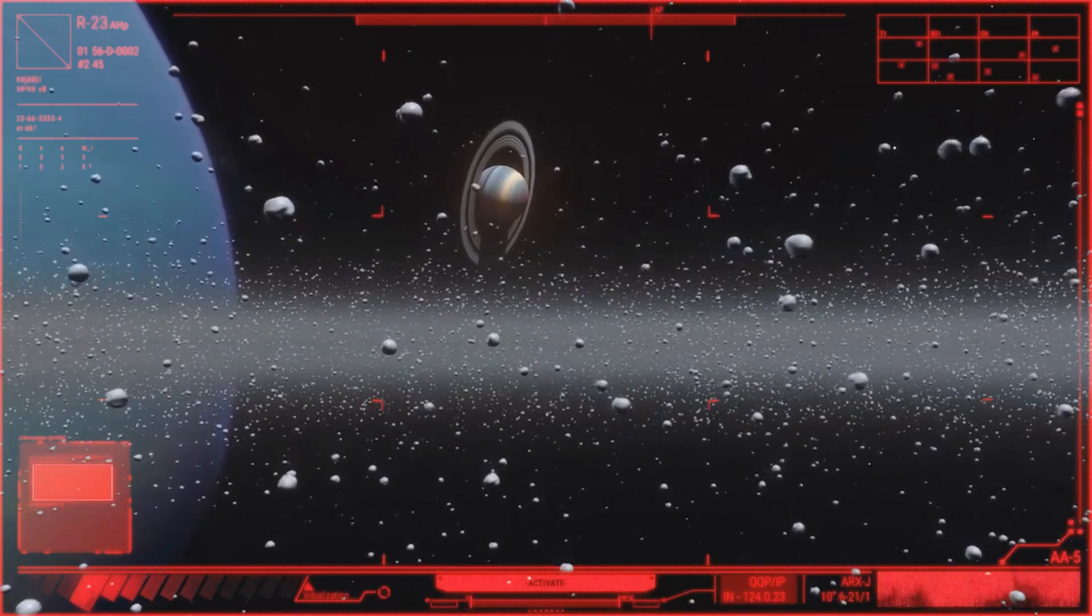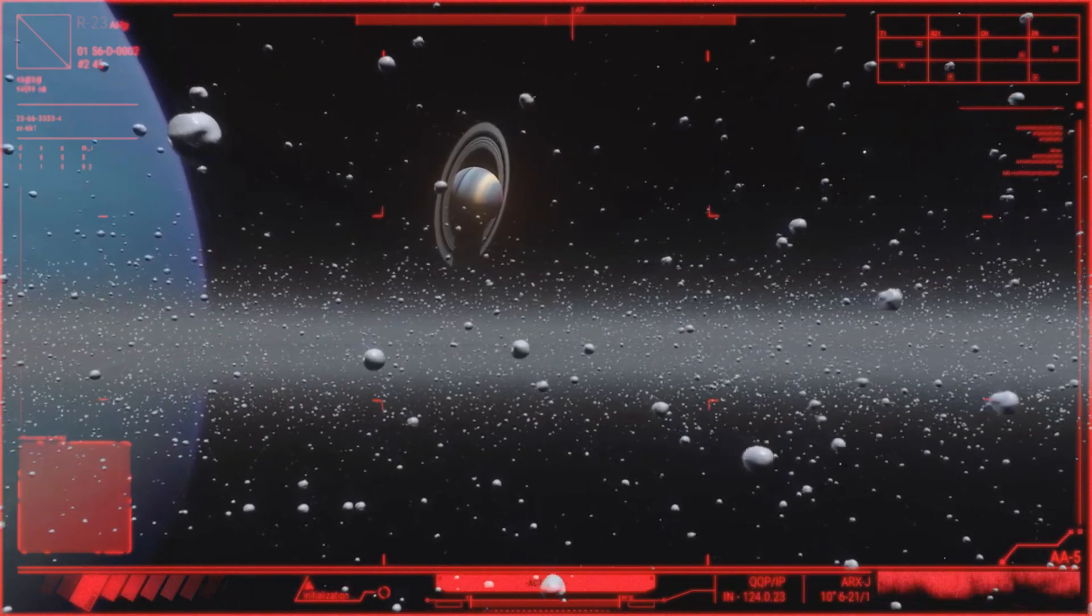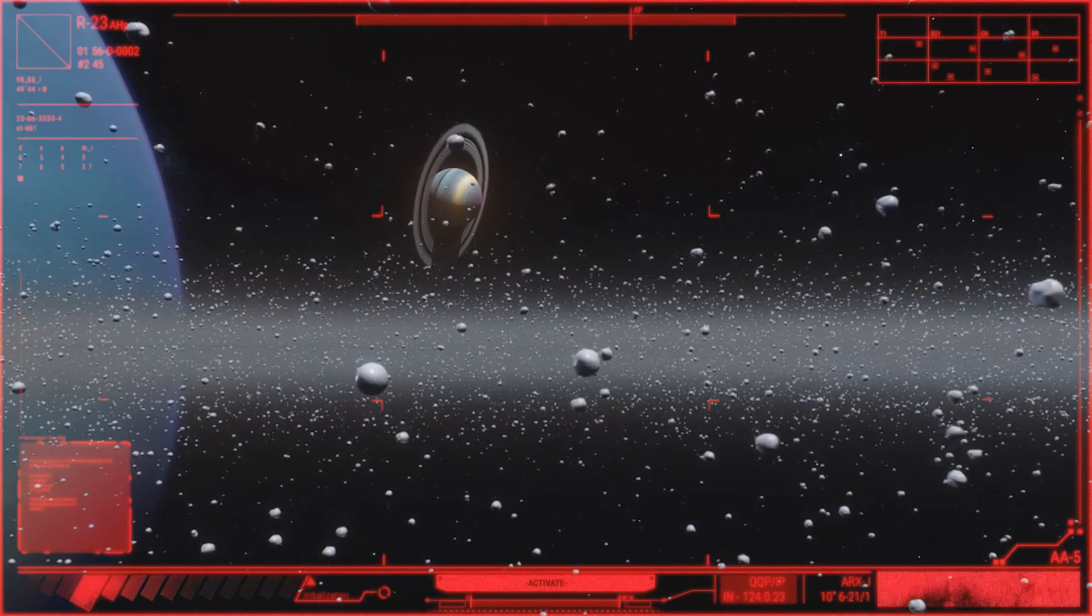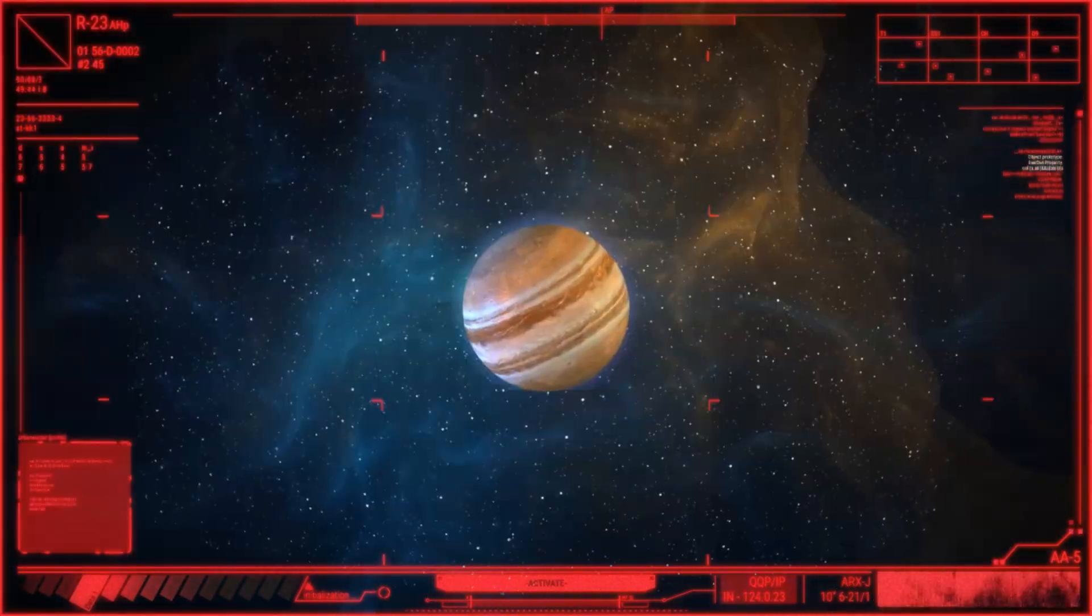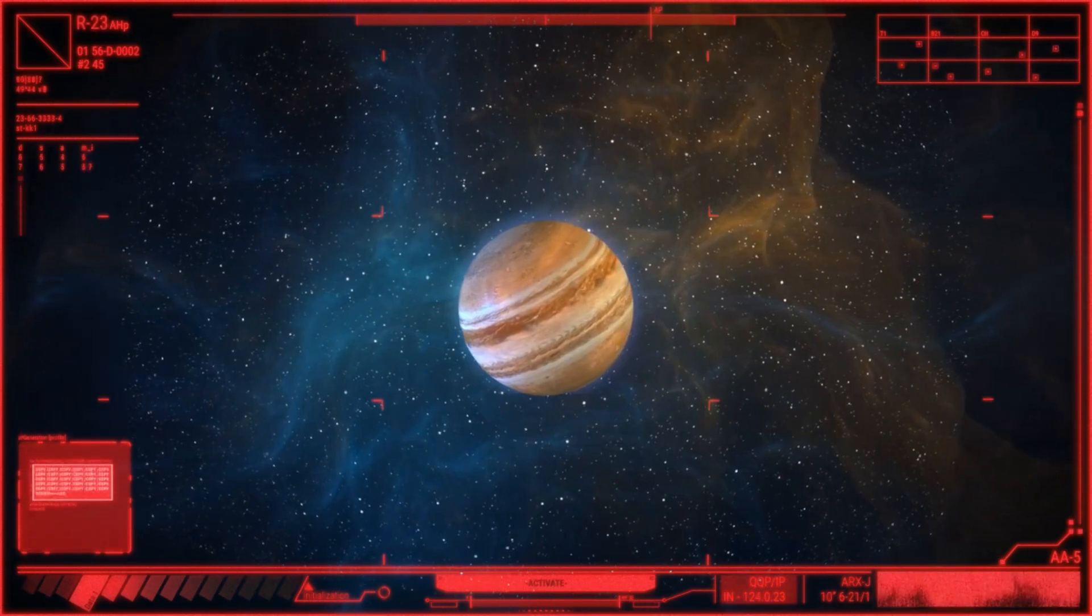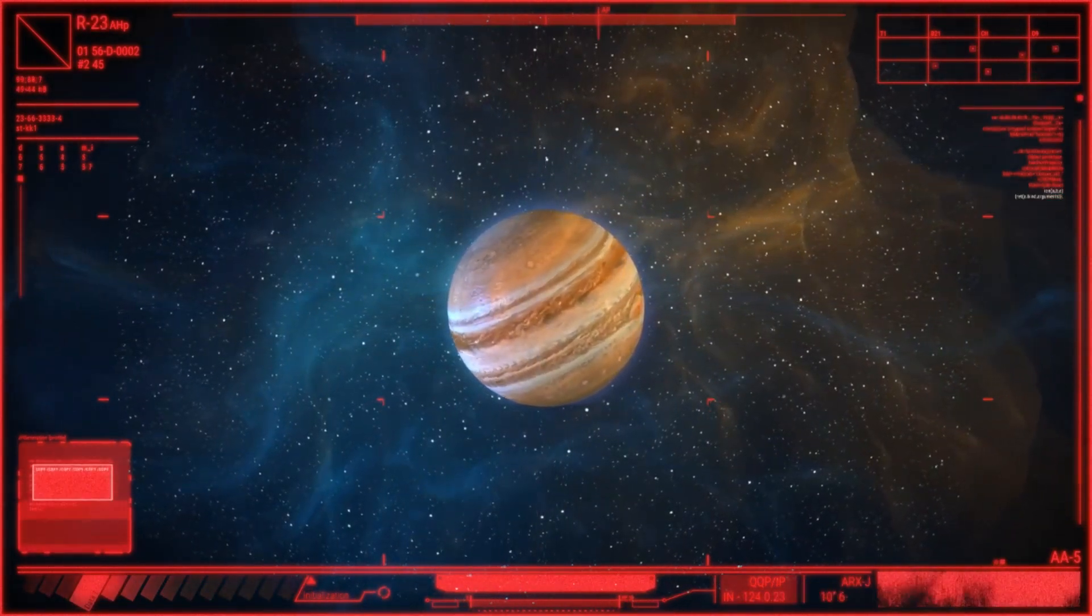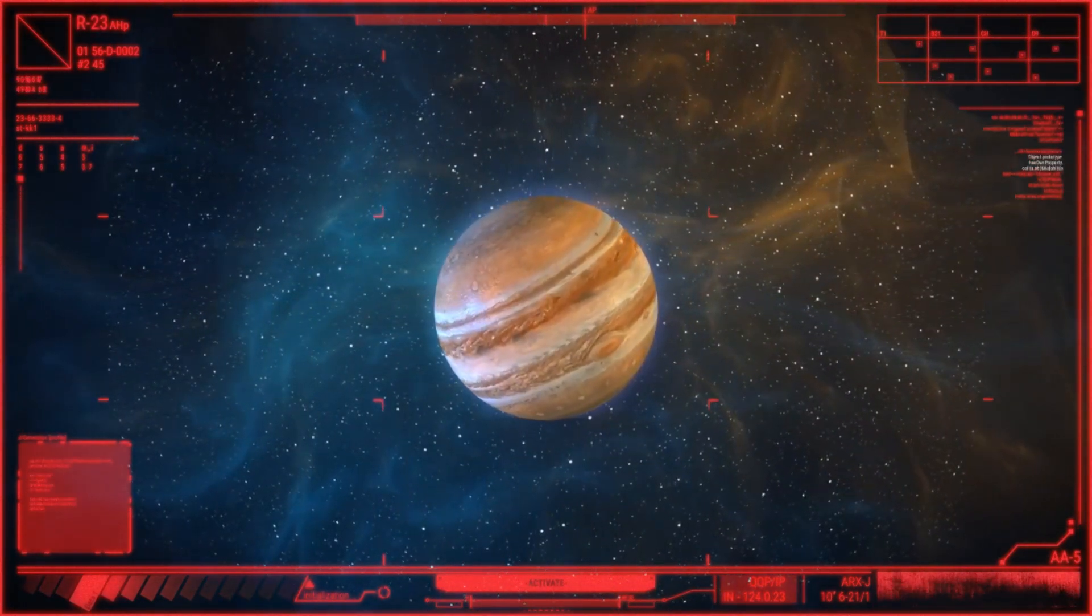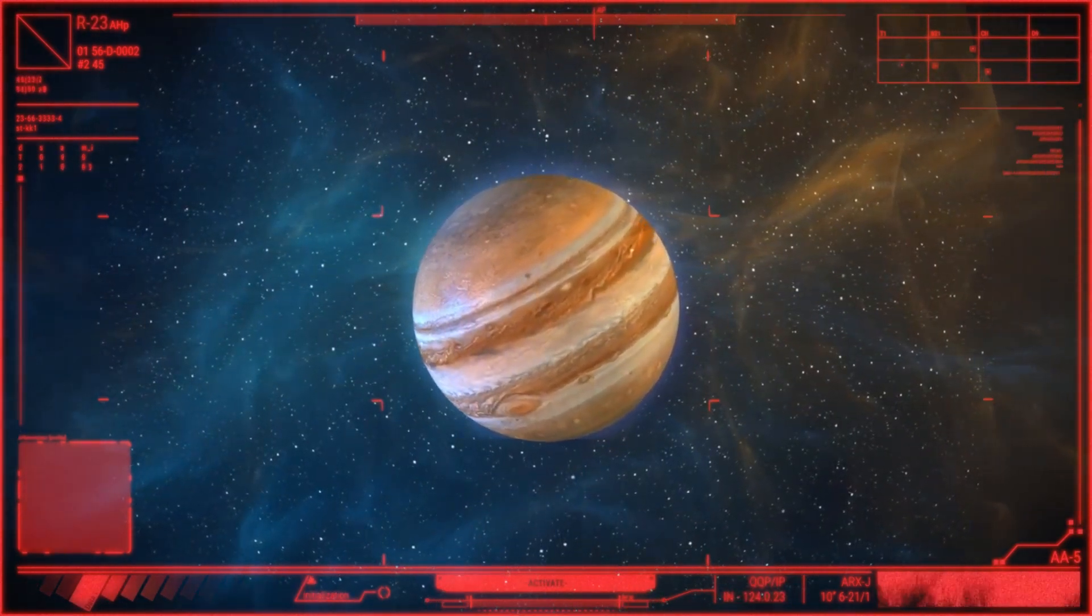Saturn. Saturn is the sixth planet from the Sun and has a famous ring system made up of ice and rock materials. The planet itself is composed of gases, predominantly hydrogen and helium, similar to Jupiter. The distance from Saturn to the Sun is about 1.4 billion kilometers. Fun fact: Saturn has many moons, but the most famous of them is Titan, which has an atmosphere and liquid lakes on its surface.